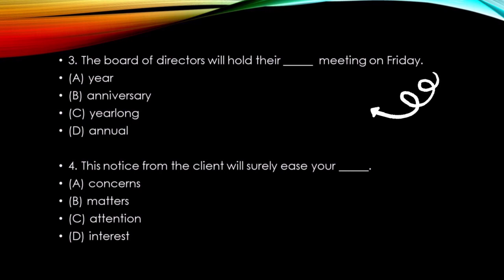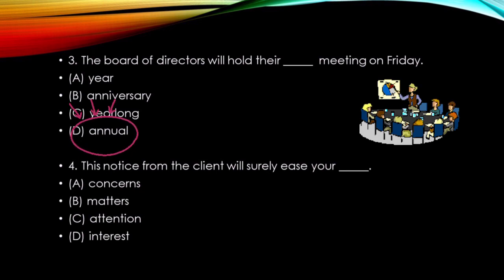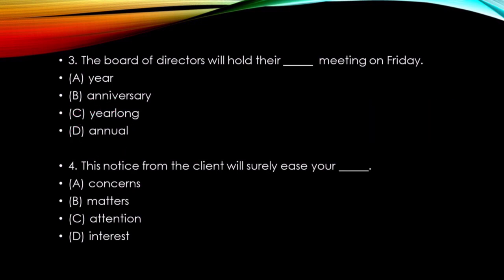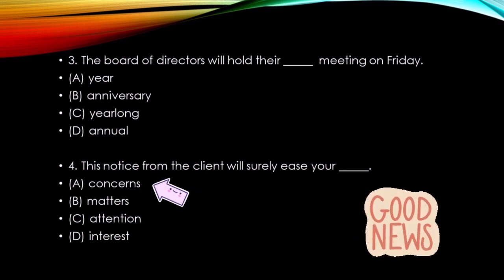Number 3: The board of directors will hold their ___ meeting on Friday. The answer is D: 'annual'. Annual adalah bentuk adjektif yang bermakna tiap tahun — kita membutuhkan bentuk adjektif untuk menerangkan kata benda 'meeting'. The complete sentence: the board of directors will hold their annual meeting on Friday — yang bermakna Dewan Direktur akan mengadakan pertemuan tahunan mereka pada hari Jumat. Number 4: This notice from the client will surely ease your ___. The answer is A: 'concern' — yang bermakna kekhawatiran. This notice from the client will surely ease your concern — yang bermakna pemberitahuan dari klien ini akan melegakan kekhawatiranmu.